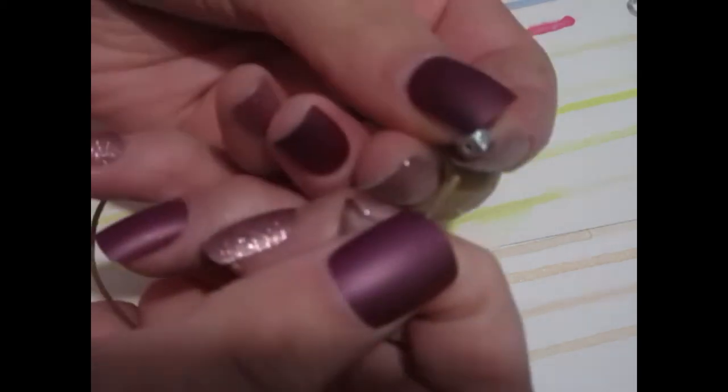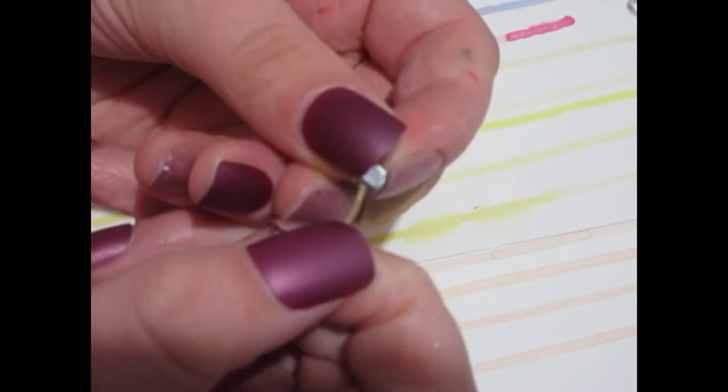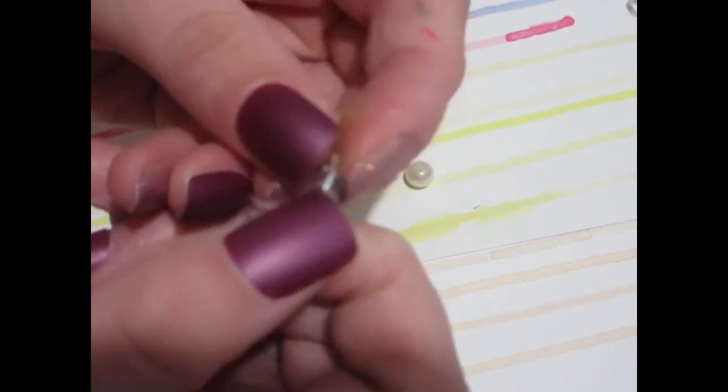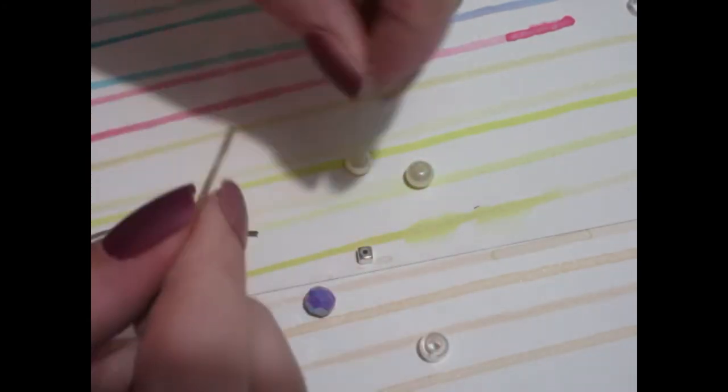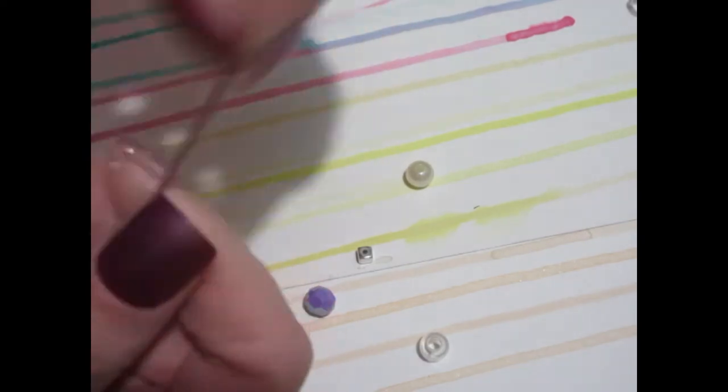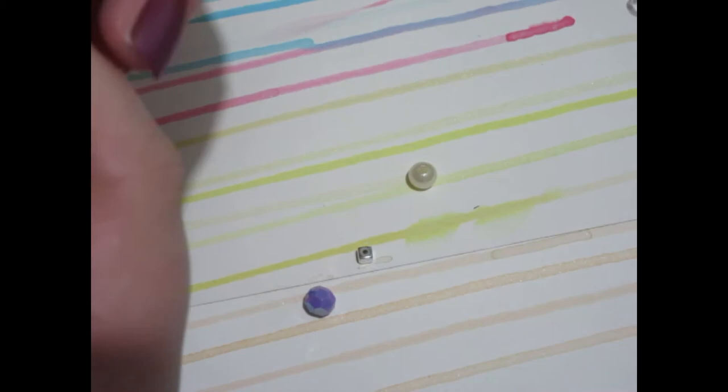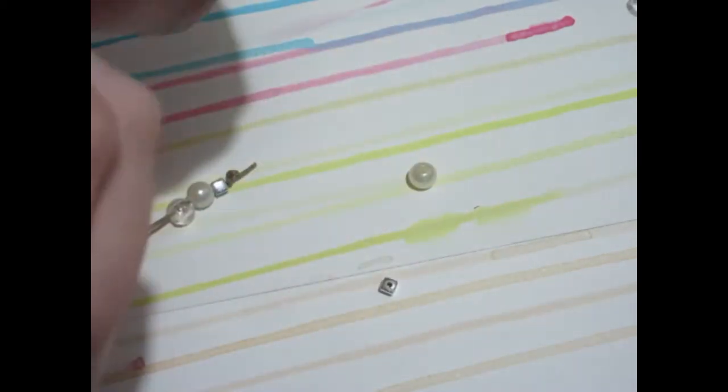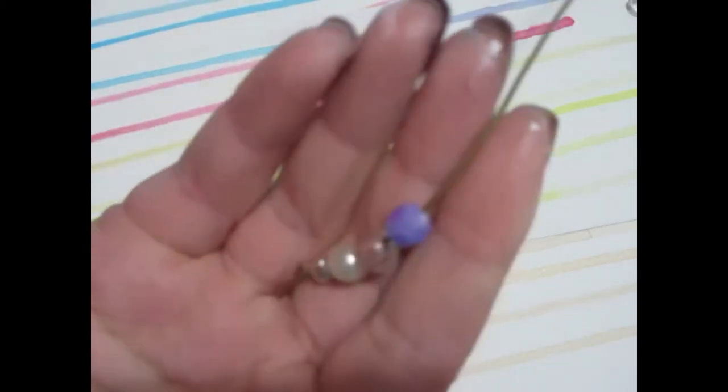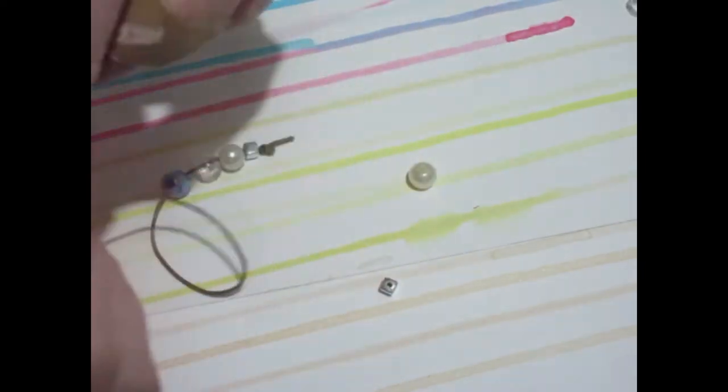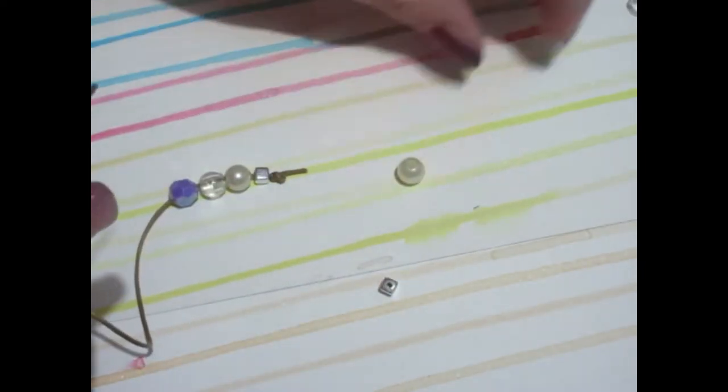So you just thread the beads onto your cord in any pattern that you want. You can also just thread it on randomly as well. And I made that purple bead that I have there the statement bead I guess as you could say, so it's the only purple bead.